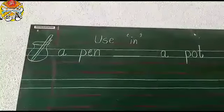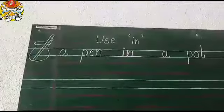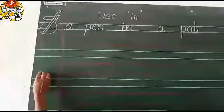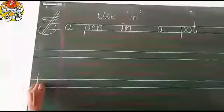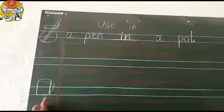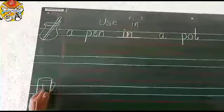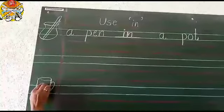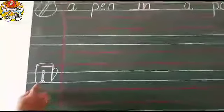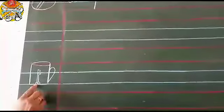Now next one — leave one line and draw the next picture. This is the picture of a mug. And now I will draw one more picture. Which picture is this? Key. So now tell me, where is a key? A key in a mug.